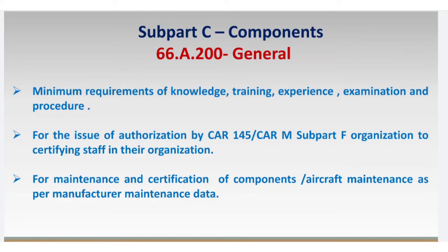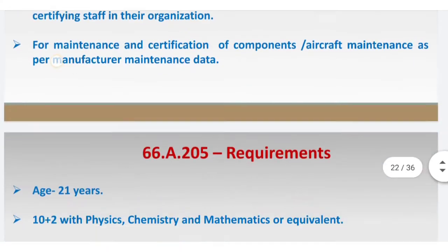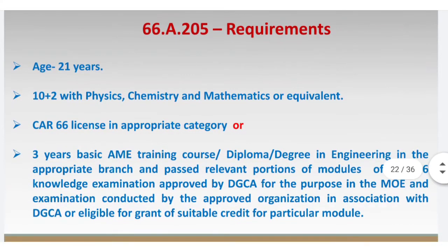First of all, the age requirement: if you compare licensing requirements with component maintenance certification authorization requirements — for licensing the age criteria was 18 years, but here for component certification the age requirement is 21 years. The educational qualification required is 10+2 with Physics, Chemistry, and Mathematics, or an equivalent qualification such as a diploma or degree in aeronautical engineering, mechanical engineering, electrical engineering, or electronics engineering.